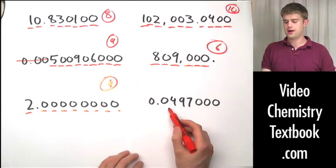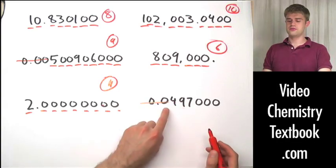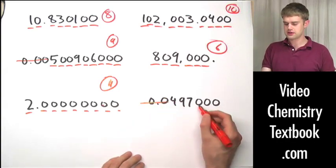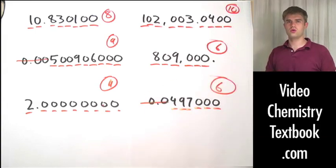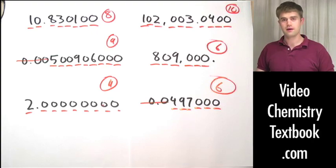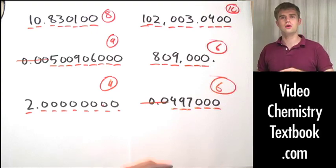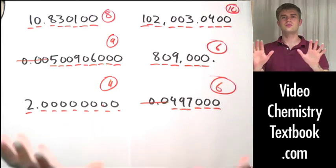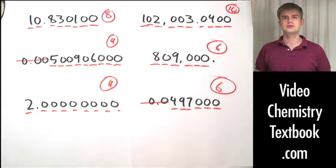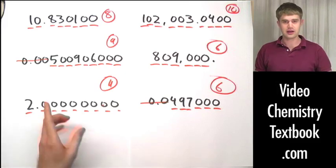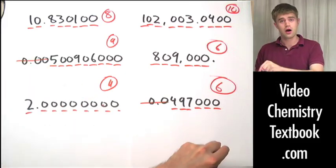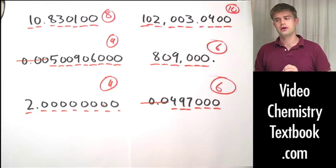And finally, for the last number: zeros to the left of significant digits are never significant. The three zeros to the right will be significant because of that decimal point, which means there is a total of six significant digits in this number. To quickly review our three main cases: zeros sandwiched between non-zero significant digits are always significant; zeros to the left or coming before non-zero digits are never significant; and zeros to the right are only significant if there's a decimal point.